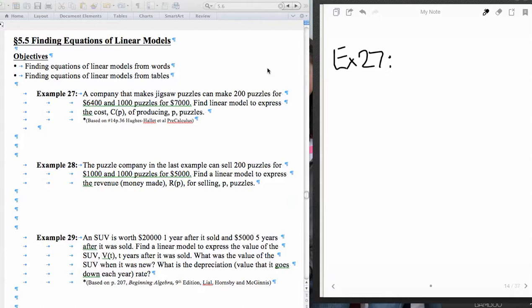So let's start with example number 27. A company that makes jigsaw puzzles can make 200 puzzles for $6,400 and 1,000 puzzles for $7,000. And we want to find a linear model to express the cost, C of P, of producing P puzzles.